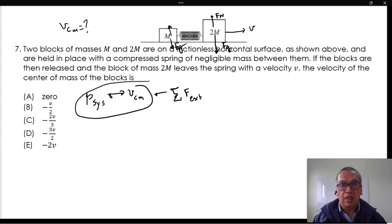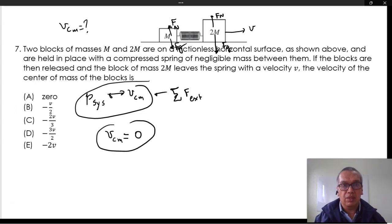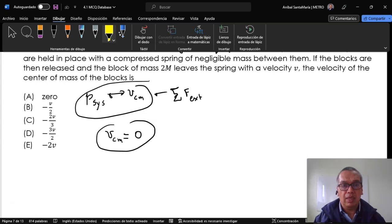They are not doing work because they are perpendicular to the motion. Therefore, the velocity of the center of mass is constant with a value of zero. The correct answer is option A.